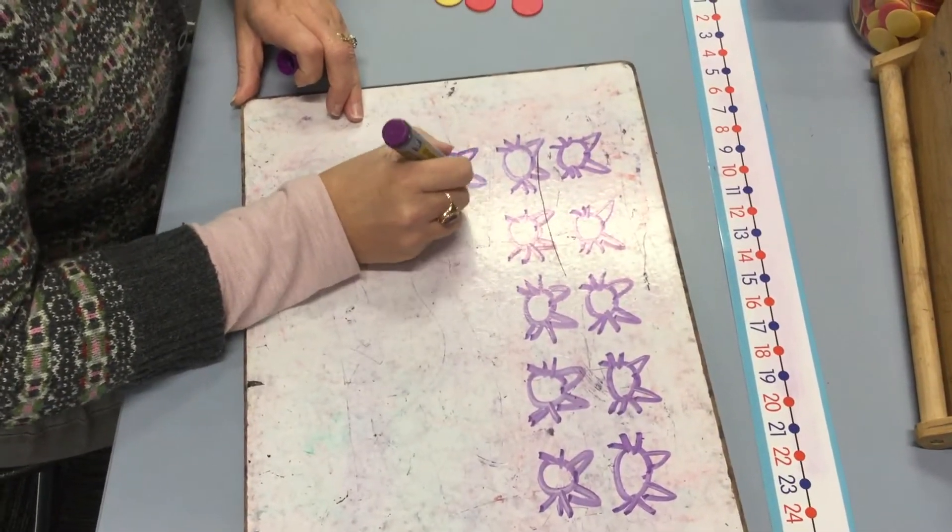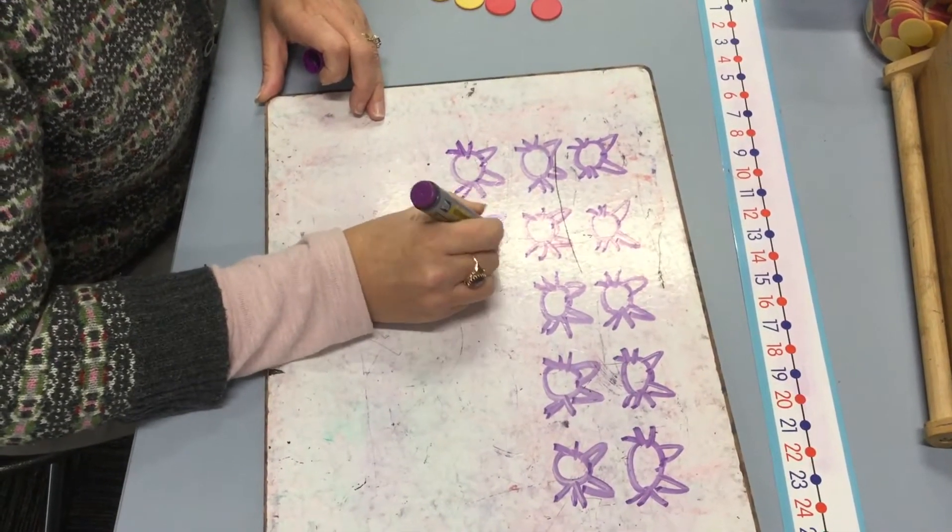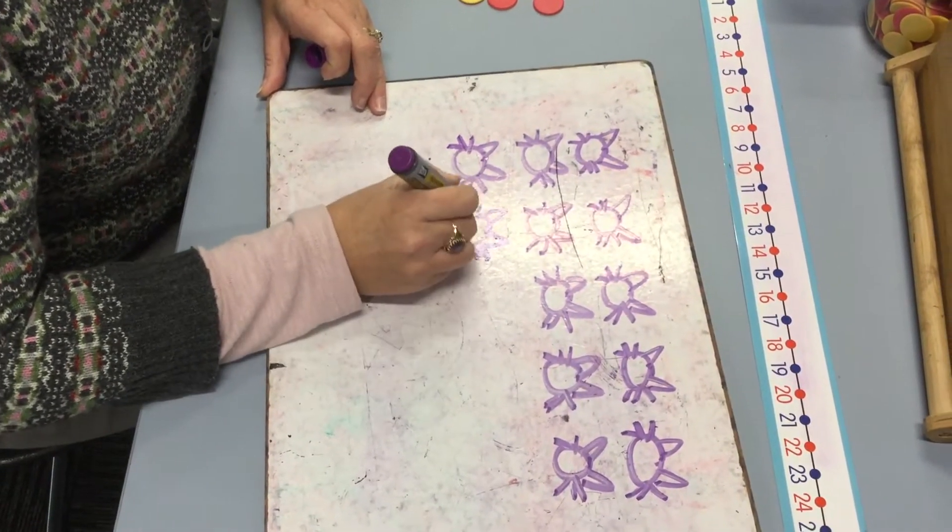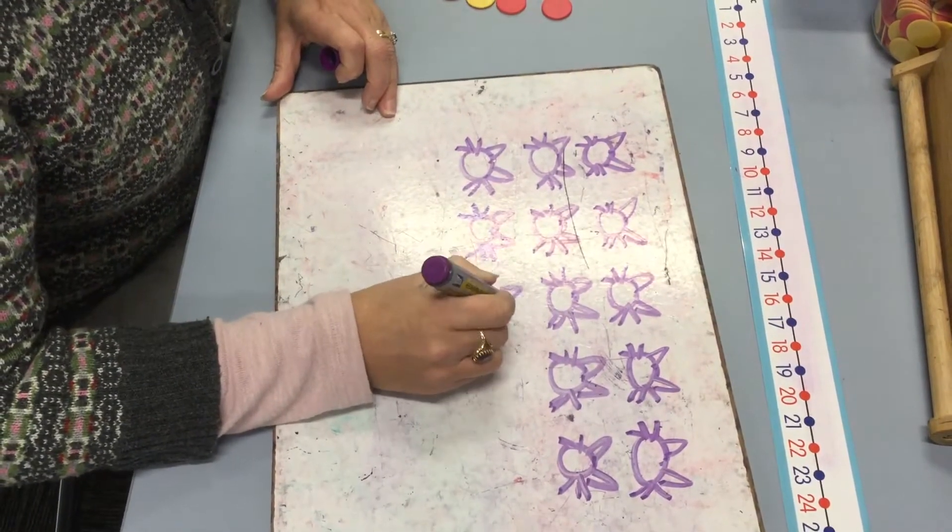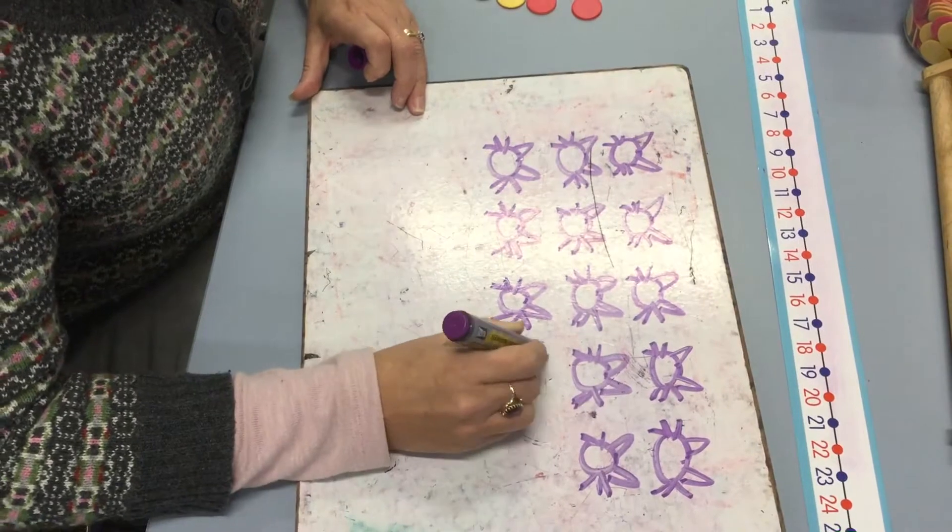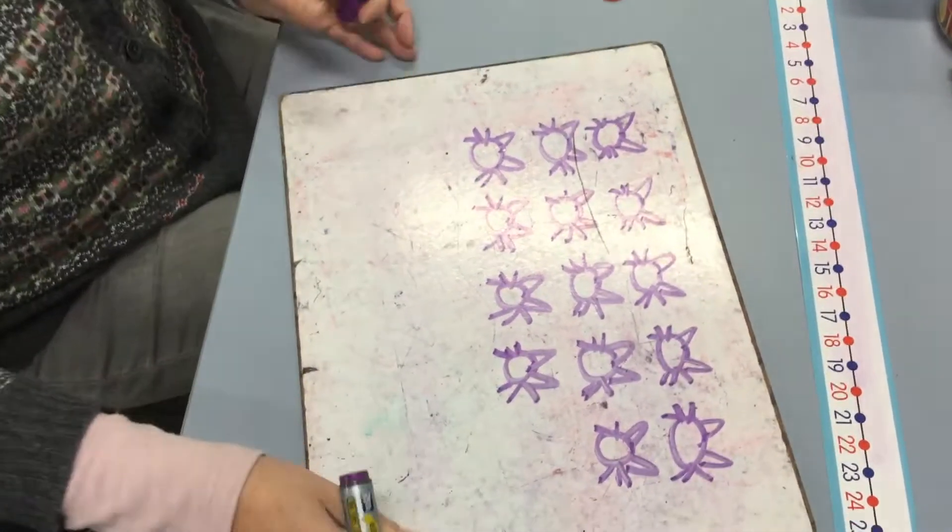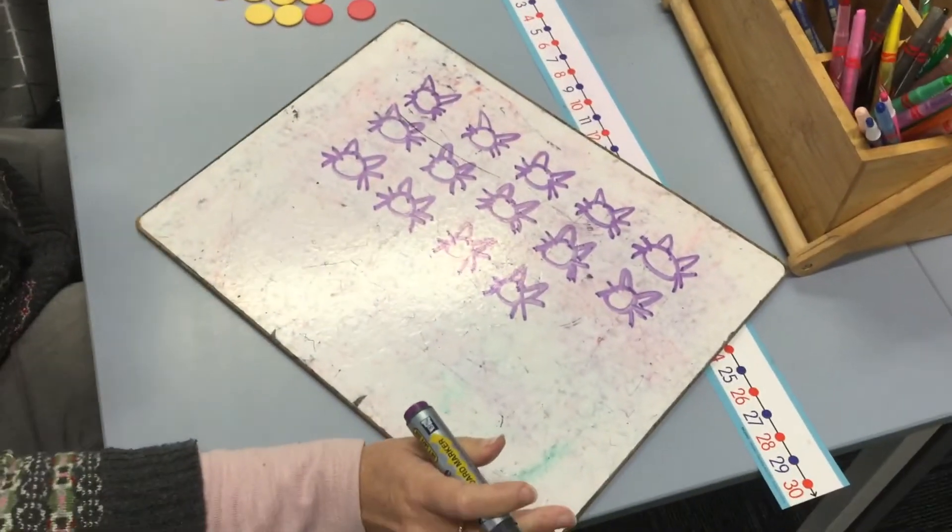I'm doing 14, aren't I? Eleven, twelve, thirteen, fourteen. There we go, we've got 14 cats and we're going to do our subtraction with our cats.